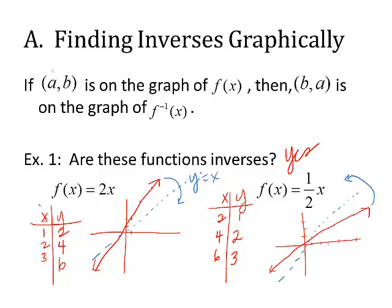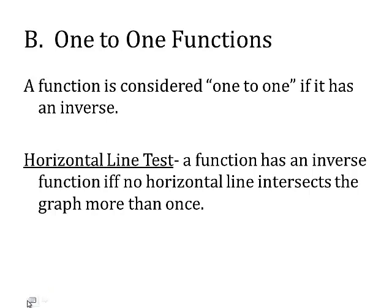On a table, you're going to see the x and y flip places. In your book, you'll look at graphs and ask: could you fold them along the y = x line and would they be inverses? You'll also look at table values. A function is considered one-to-one if it has an inverse.